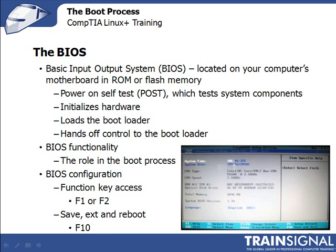Next, the BIOS initializes hardware, then loads the bootloader from whatever boot device is indicated — usually the first hard disk. Finally, it hands off control to the bootloader, which proceeds with loading the operating system. What you see on this screen is a typical BIOS configuration screen, though yours may look different depending on your system. Importantly, you can enable and disable system hardware — things like Ethernet, USB ports, video hardware, and hard disk controllers — all from within the BIOS.